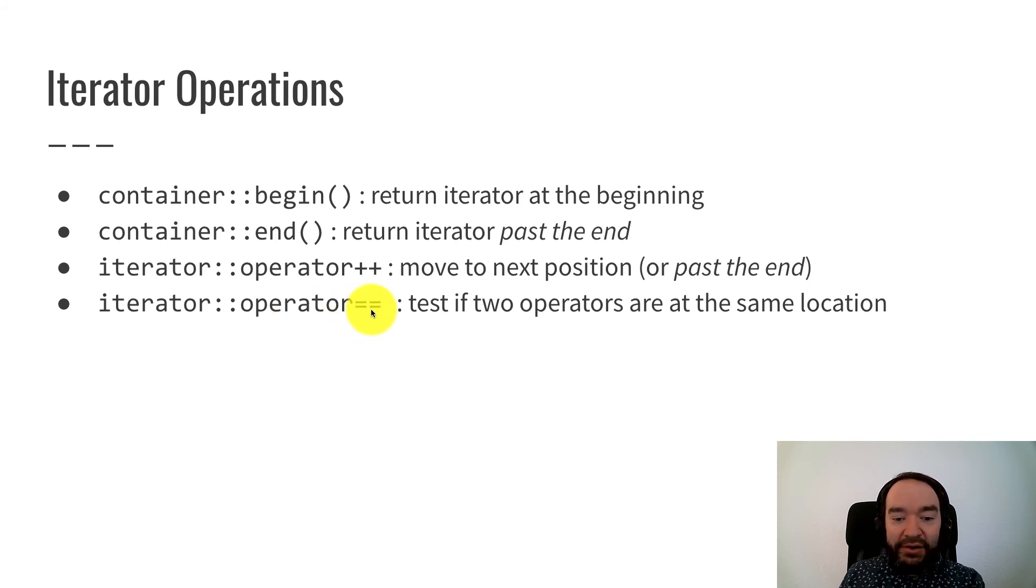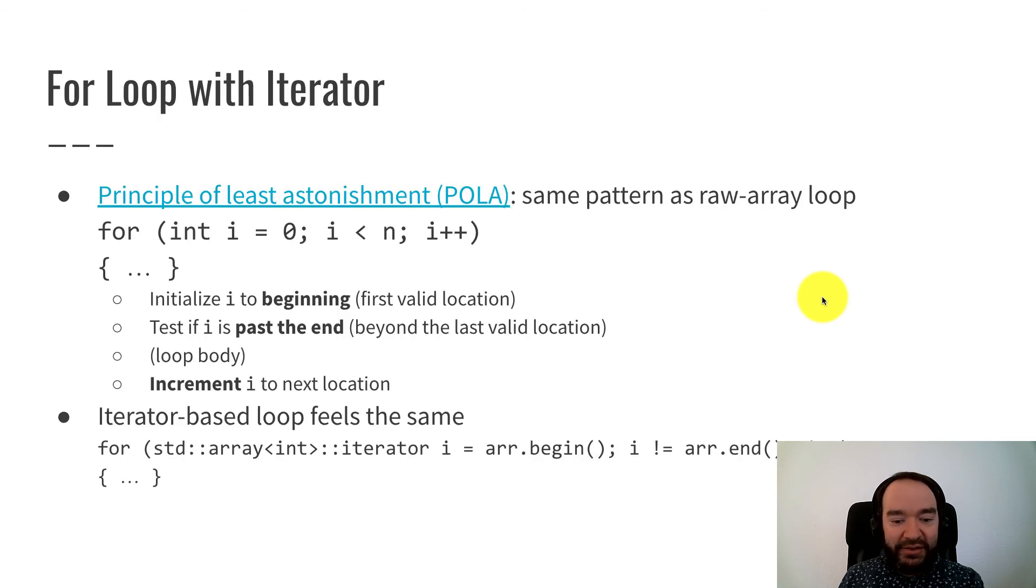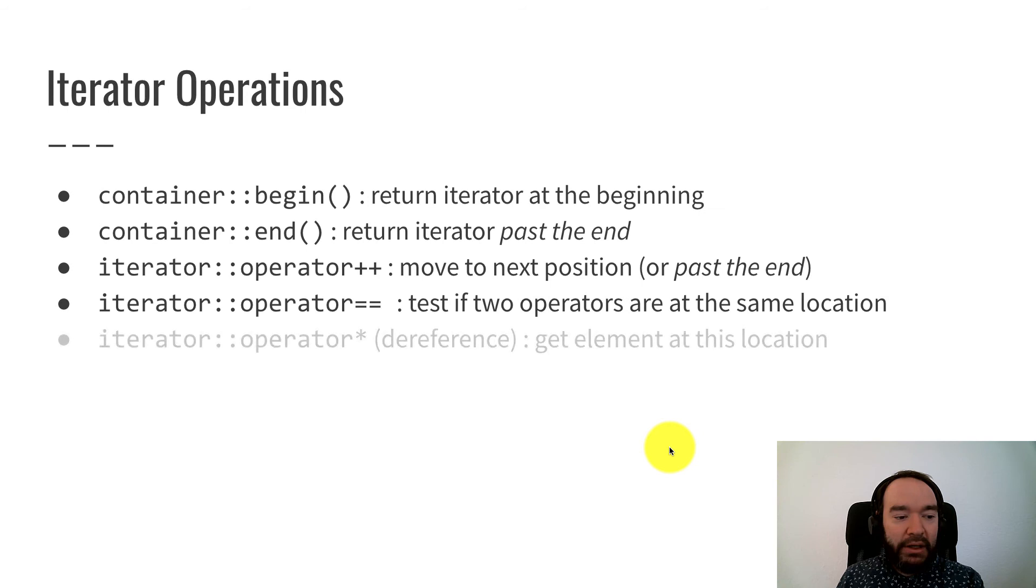Iterator needs a comparison, an equal-equal, typically a not-equal as well, to test if two iterators are at the same location. We need that so we can tell when the loop is over. So that's necessary so that this part right here can be written. And there's a dereference operator. That's how you get the element at this location. So if i is an iterator, then star i follows the iterator, looks at that location in the data structure, and gives you that element.